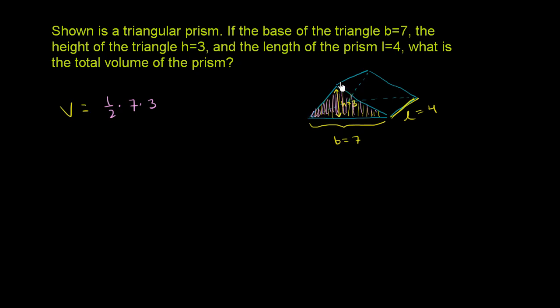And then we're going to multiply it by the depth of this triangular prism. So we have a depth of 4. So then we're going to multiply that times the 4, times this depth, times the 4.